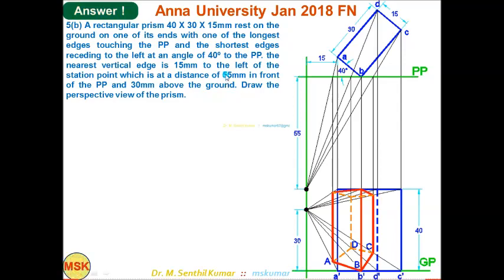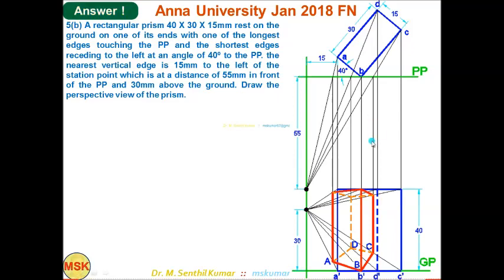For the front view, GP is the reference line. The distance between PP and GP should be slightly more than the sum of the in-front distance and above distance of the station point: 55 + 30 = 85, plus 10 more = 95 mm minimum. Draw GP at least 95 mm below PP. Draw projectors from all top view points with respect to GP to complete the front view. In perspective projection we follow third angle projection.